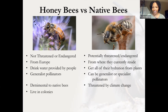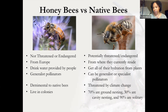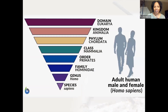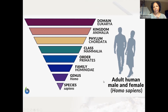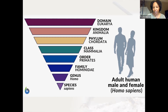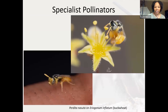Honeybees live in colonies; native bees are 70% ground-nesting and 30% cavity-nesting, and about 90% are solitary, meaning they live by themselves. I decided to put these taxonomic categories here because I'm going to be saying a lot of bee names. Typically we say just the genus — second from the bottom — and then the species. I'll use Homo sapiens as an example since we're all people: Homo is our genus, sapiens is our species. So when I say a bee name, I'll be saying the genus and the species, same as with plant scientific names.